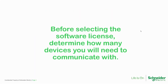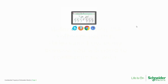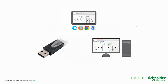Now that you know how many devices you are communicating to, it's time to select your licensing options. In this video, I'll be focusing on the software license with the native HTML5 clients. There are still part numbers for a USB license dongle and legacy client types, but licensing can be more complex in those situations. I recommend reaching out to Schneider Electric directly if these are needed.